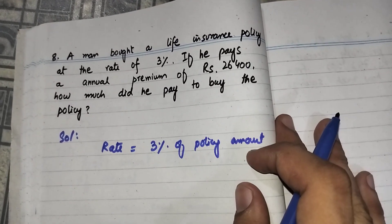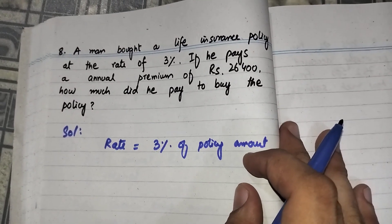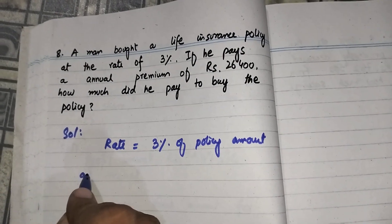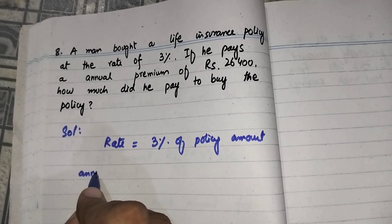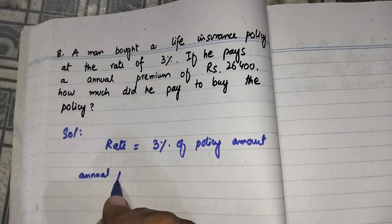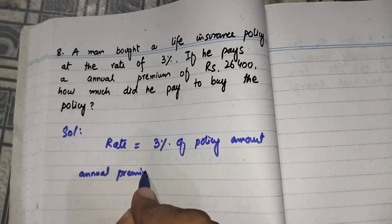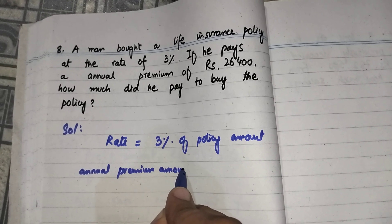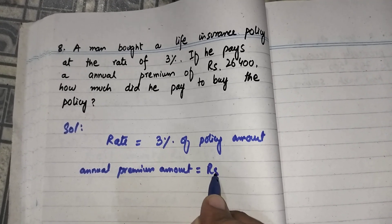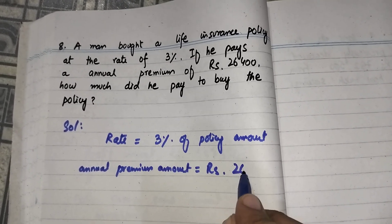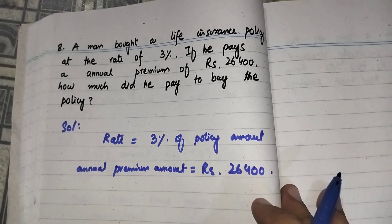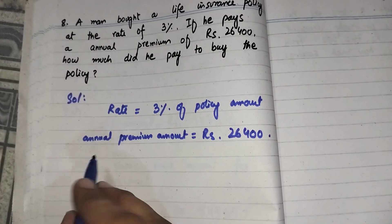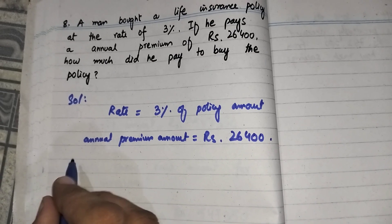The policy amount is the insurance amount. If he pays an annual premium of Rs. 26,400, how much did he pay to buy the policy? We have to find out the policy amount.